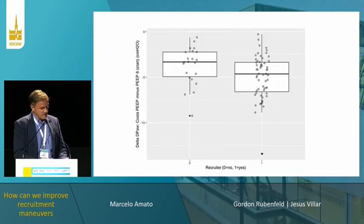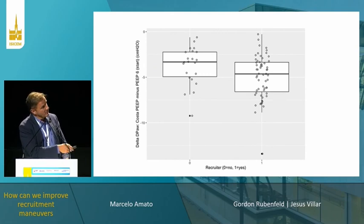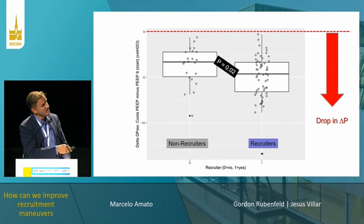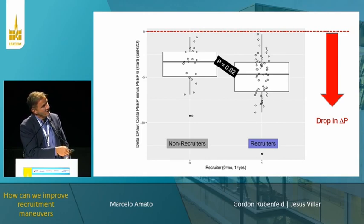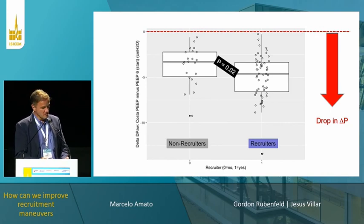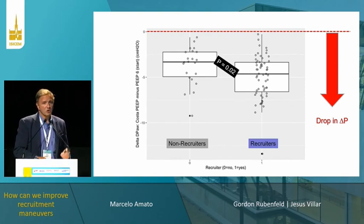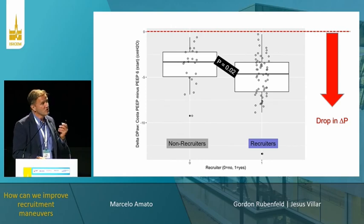Something very interesting about the Costa method: splitting the population into high and low recruiters and measuring how much driving pressure can be reduced after recruitment — a lot. Some patients had a reduction of almost 10 centimeters of water in driving pressure. The nice thing about the Costa method is that even for patients with moderate benefit, you are not causing any harm — no increase in driving pressure.